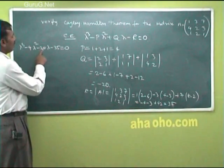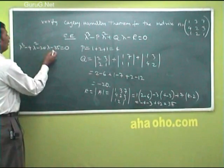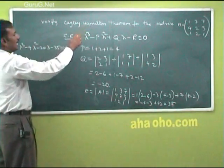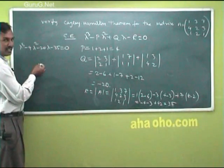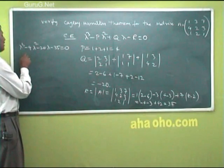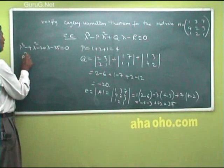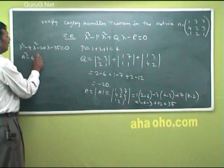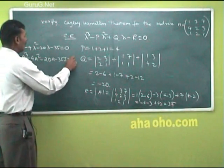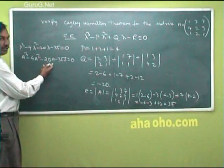So the characteristic equation is lambda cubed minus 4·lambda squared minus 20·lambda minus 35 = 0. To verify the Cayley-Hamilton Theorem, we replace lambda by A: A cubed minus 4A squared minus 20A minus 35I = 0. So we need to find A squared, A cubed, and 20A.